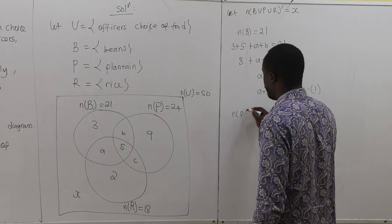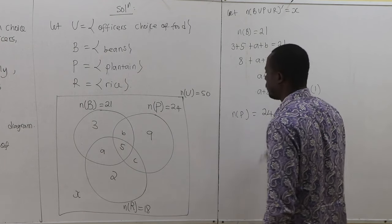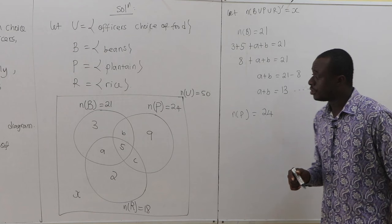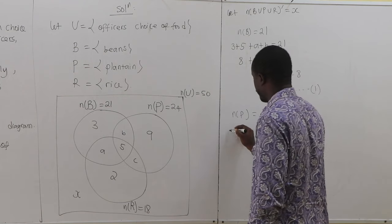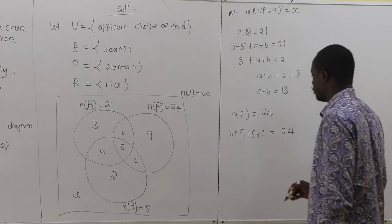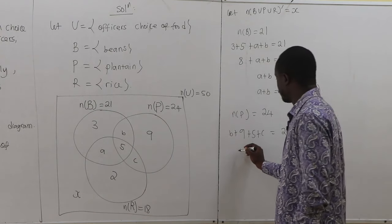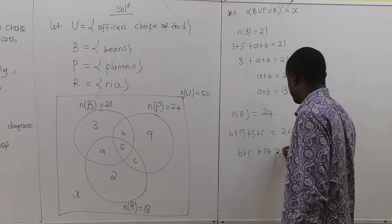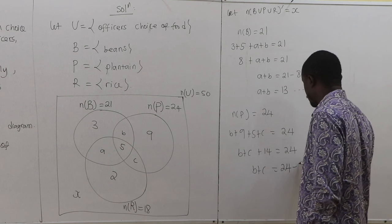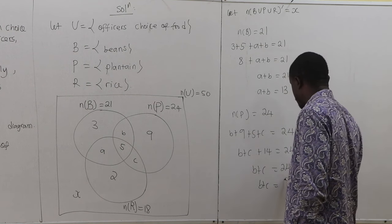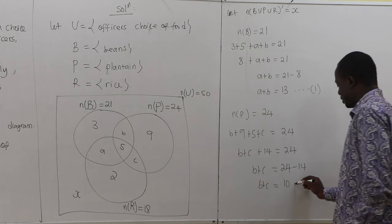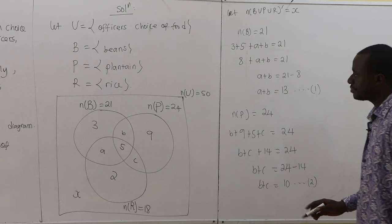We also know that number of P is equal to 24. Addition of everything in the region of P should equal 24. So we have B plus 9 plus 5 plus C equals 24. That gives us 9 plus 5 equals 14, so B plus C equals 10. Let's call this equation 2.